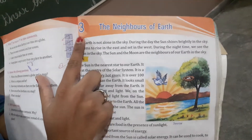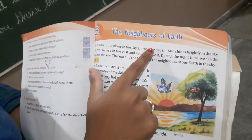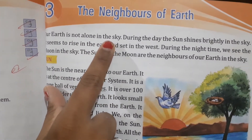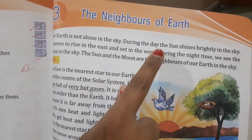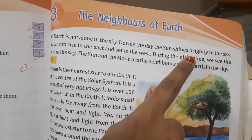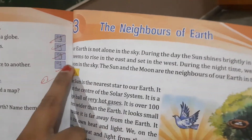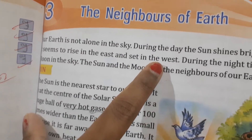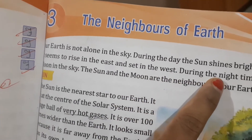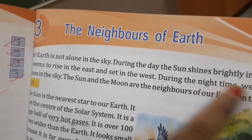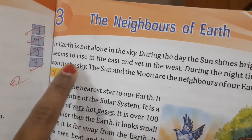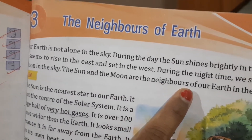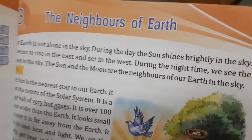Lesson number 3: The Neighbors of Earth. Our earth is not alone in the sky. During the day, the sun shines brightly in the sky — it seems to rise in the east and set in the west. During the night time, we see the moon in the sky.